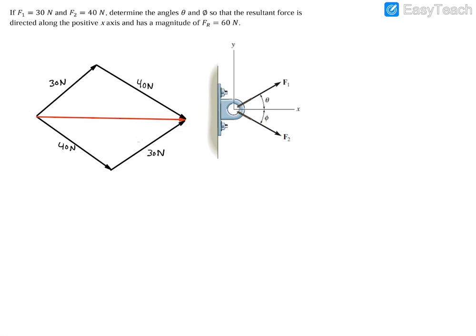And now we have our resultant force, which again was given to us as 60 newtons. And as you can see, you have a parallelogram with all the sides figured out. So all we're missing now is our angle theta and our angle phi.